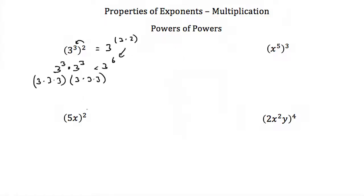The same thing happens with variables. Here we have x to the fifth to the third power. You multiply your exponents, so this is x to the fifth times 3, or x to the fifteenth.